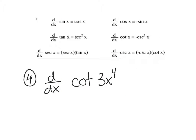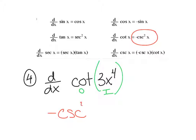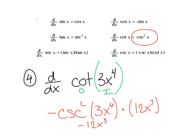Example four: take the derivative of cotangent of 3x to the fourth. I'd encourage you to pause and try it on your own first. Labeling inside and outside: the derivative of the outside is negative cosecant squared — keep the inside — times the derivative of the inside, which is 12x cubed. Pulling the coefficient out front: negative 12x cubed cosecant squared of 3x to the fourth.